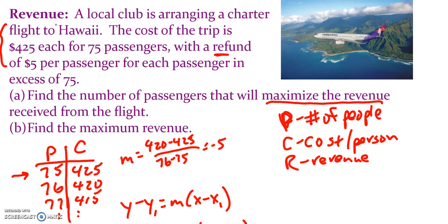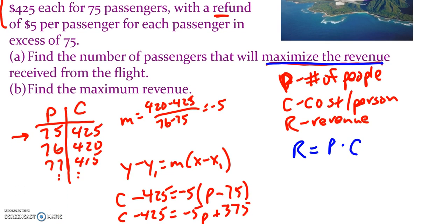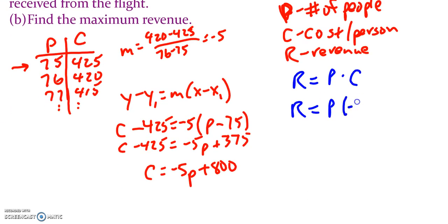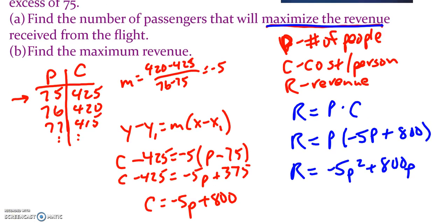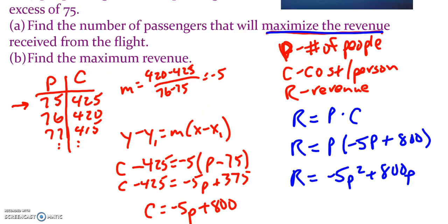Now let's think about how does this help us with our maximum revenue. We're going to find the number of passengers that would maximize revenue. Revenue, to find revenue, that would be cost per person times the number of people. Well, we just found an equation for C, so we can substitute that in. Go ahead and distribute through that P. So now we have a revenue equation that's written in terms of our number of people, and we want to maximize this revenue. So we want to take the derivative of it.